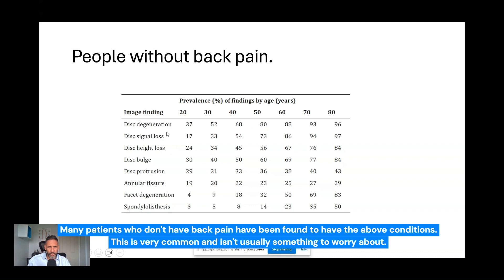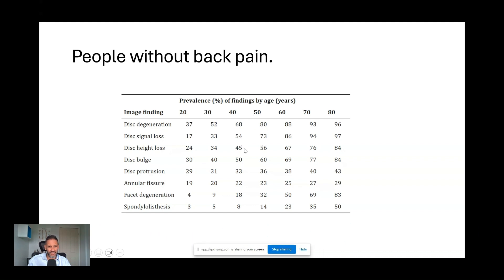Disc degeneration is a broad term. It can include disc signal loss where it looks a little bit dark on the MRI — again 54% of asymptomatic people. A bit of loss of height: 45%, and you see loss of height on a plain X-ray. I often see this in patients who've been to a chiropractor with X-ray facilities on site — they have a plain X-ray done and then overemphasize the disc height loss, which is very common in people who don't suffer with back pain. Disc bulges, protrusions, annular tears — the lining of the disc being torn — all of these things are very common findings in people who do not have back pain.